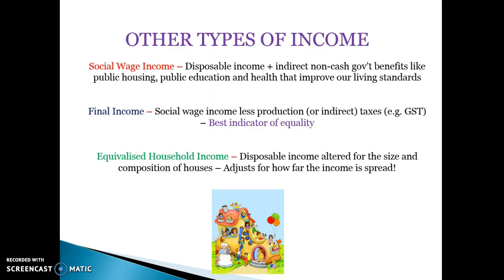Social wage income is the fourth type. It is your disposable income — market income, plus cash benefits, minus direct taxes — plus any indirect non-cash benefits from the government. These include public housing, public education, and public health that improve living standards. Social wage income will be higher than disposable income for nearly all people because it includes these non-cash benefits received from the government.